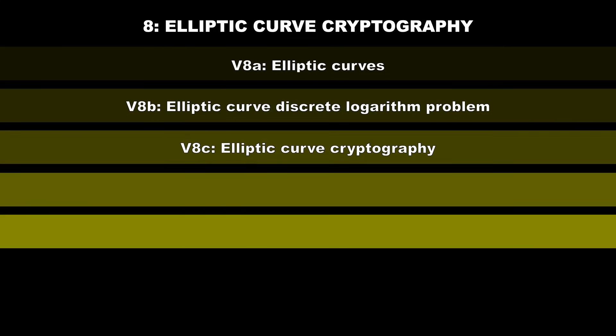In V8c, we'll explain why elliptic curve cryptography is an attractive alternative to RSA, and we'll present some elliptic curves that are commonly used in practice, including P256, Curve 25519, and P384. In video lecture V8d, we'll present the elliptic curve Diffie-Hellman key agreement scheme, and explain why Google adopted it as its default key establishment mechanism for TLS in 2011.